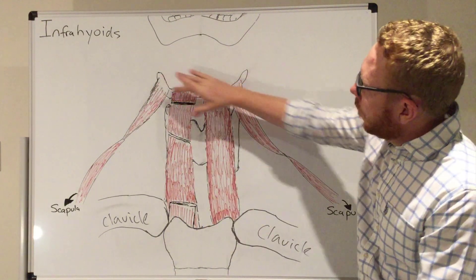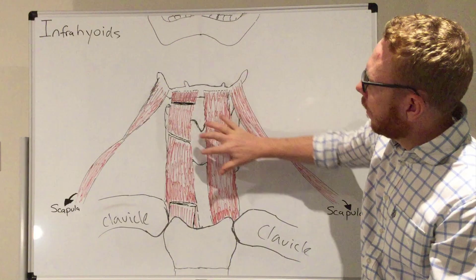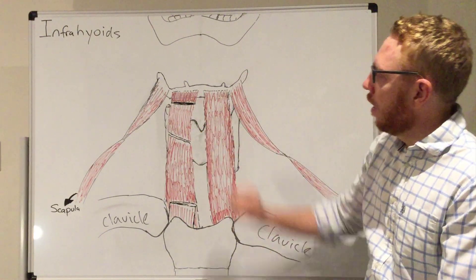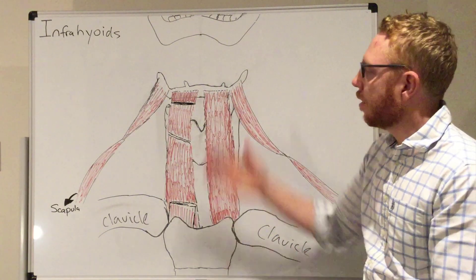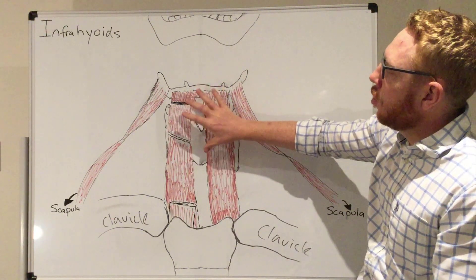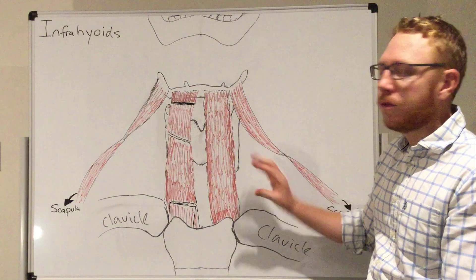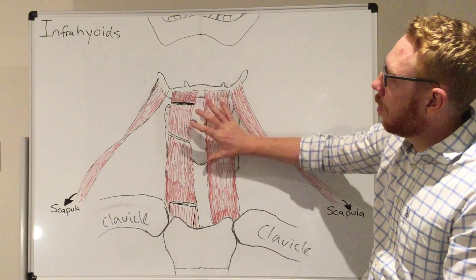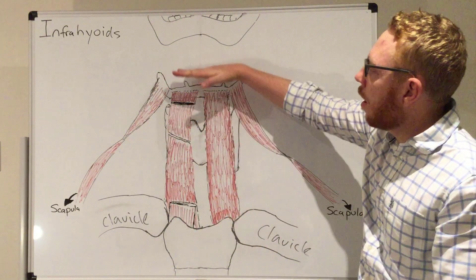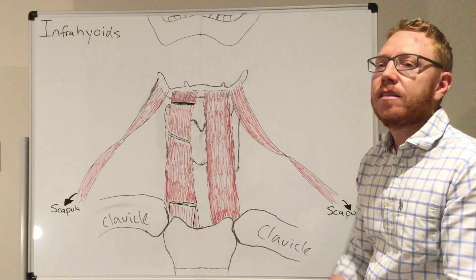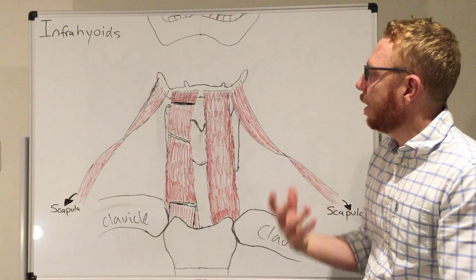With the hyoid which you can see here, the bone here, and the thyroid cartilage behind it, this works because there is a membrane that connects the hyoid to the thyroid, the thyrohyoid membrane. It works as a unit. These four muscles will essentially be drawing the hyoid or the thyroid down as a collective, particularly when the hyoid has been elevated in things like swallowing and speech.